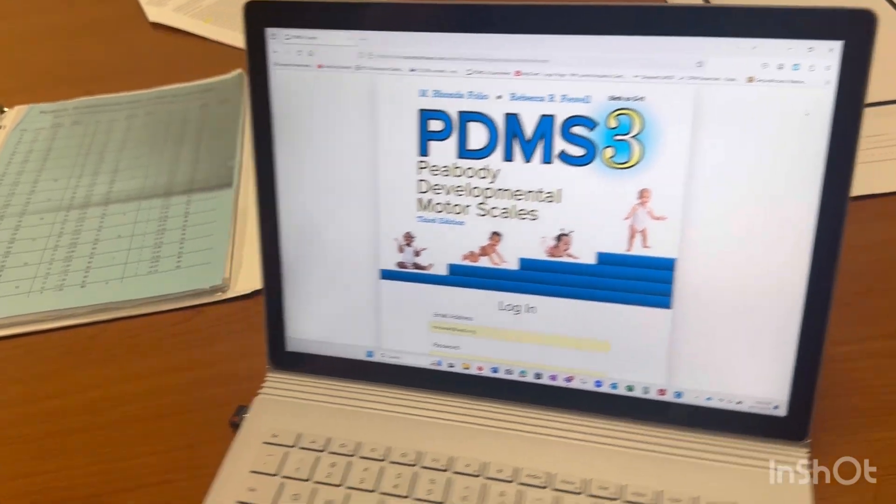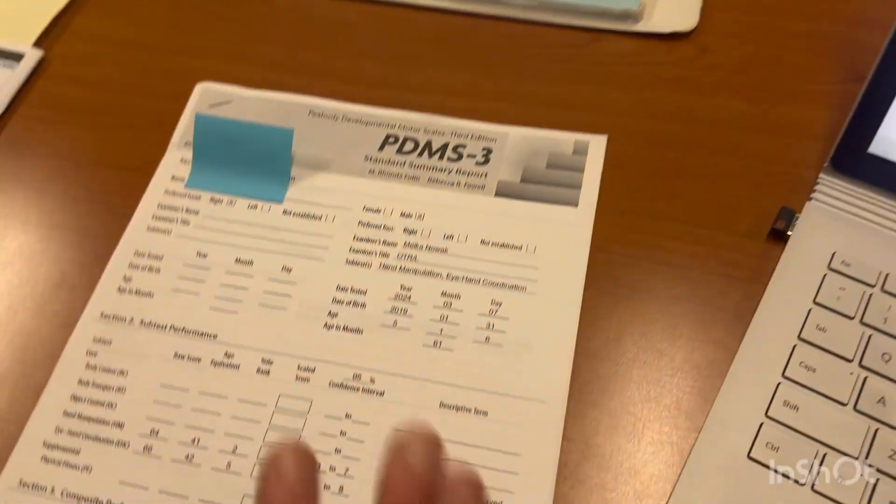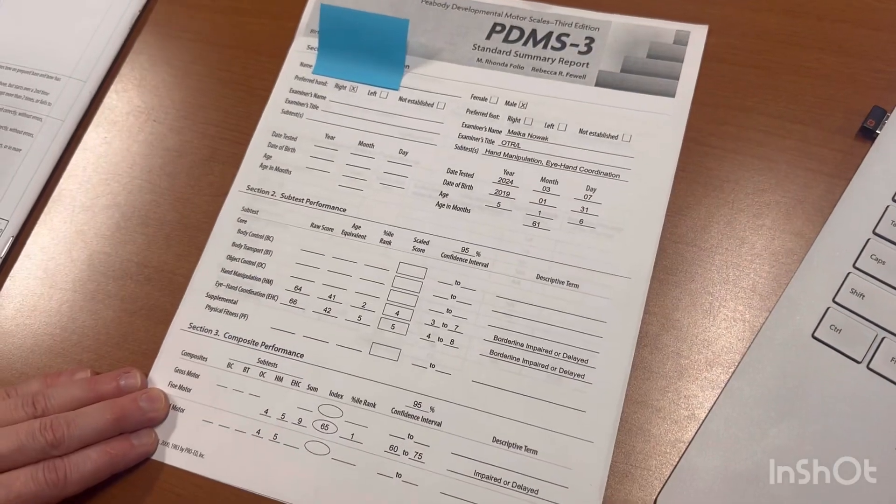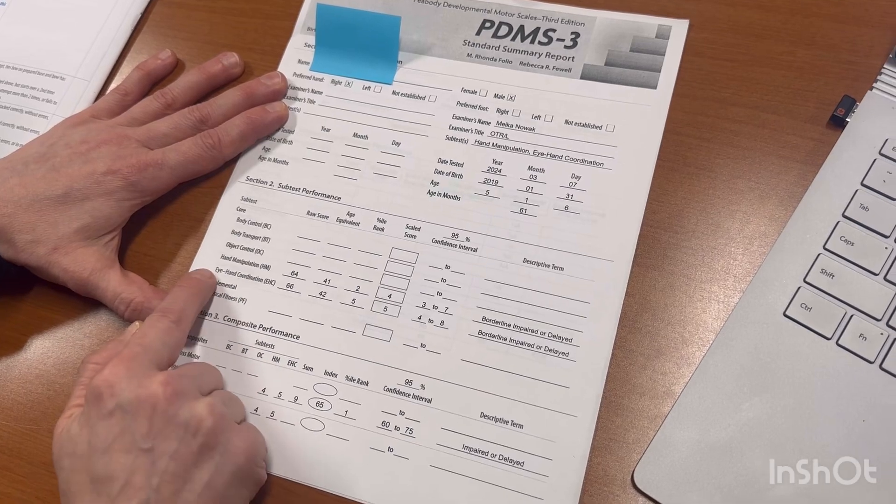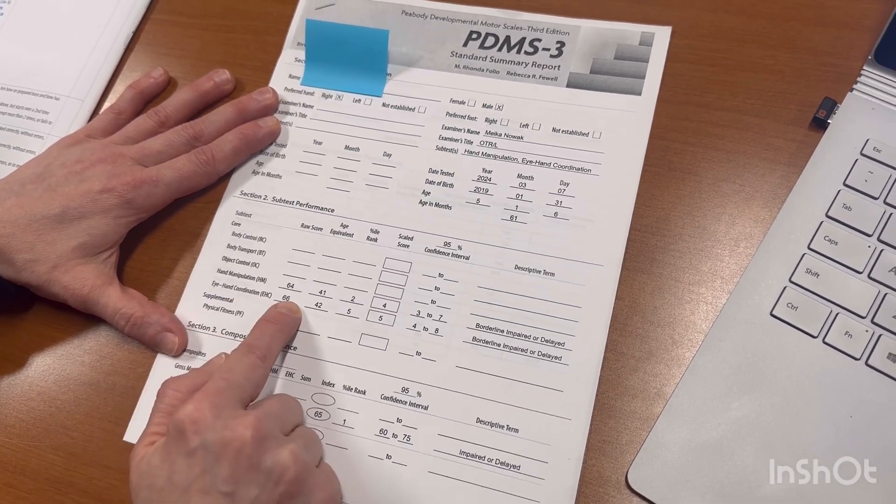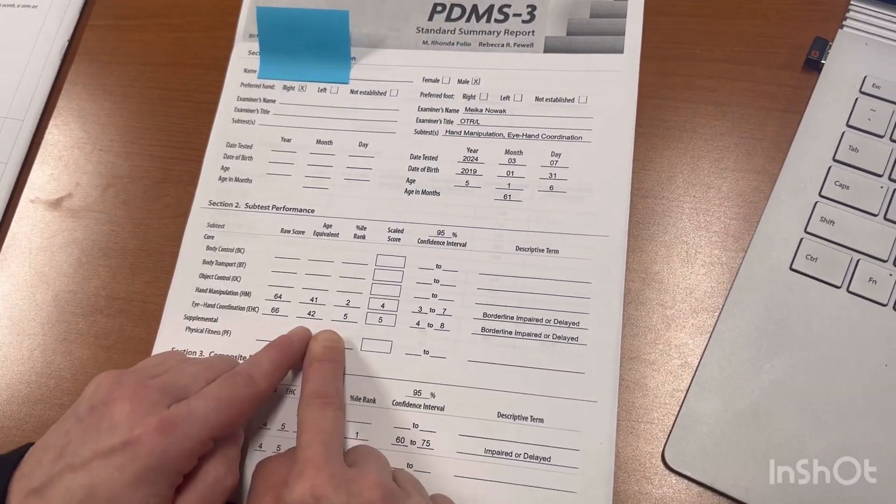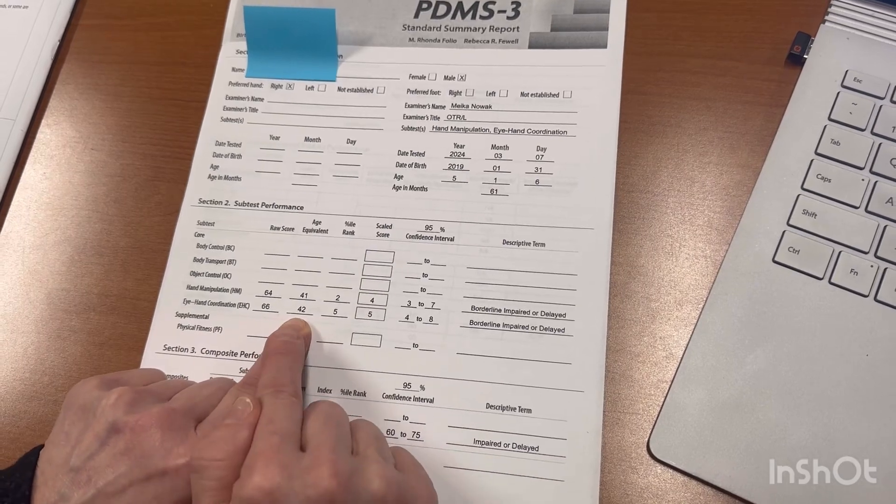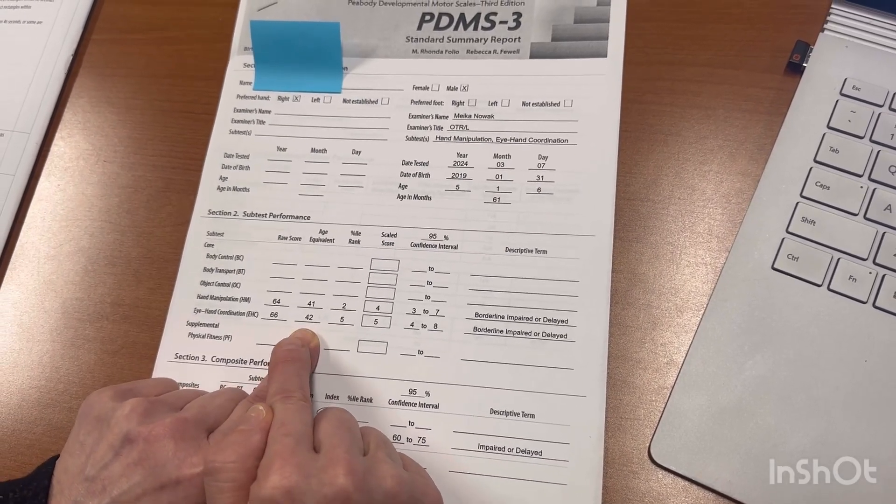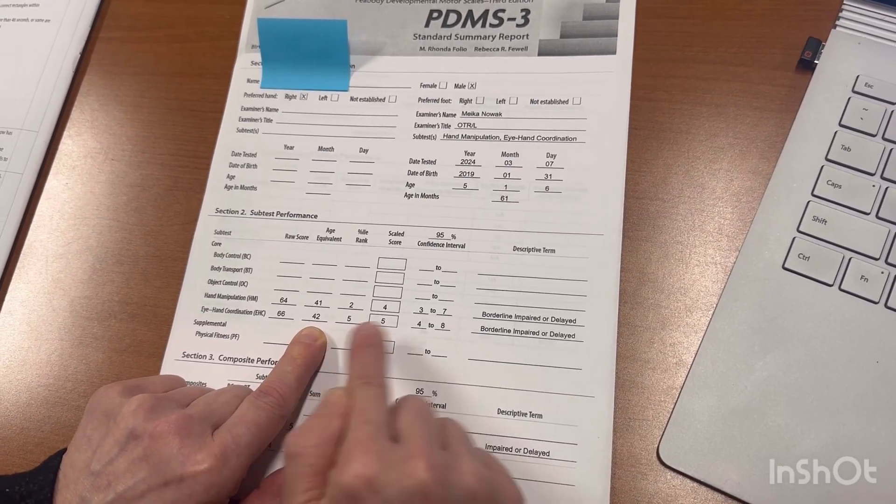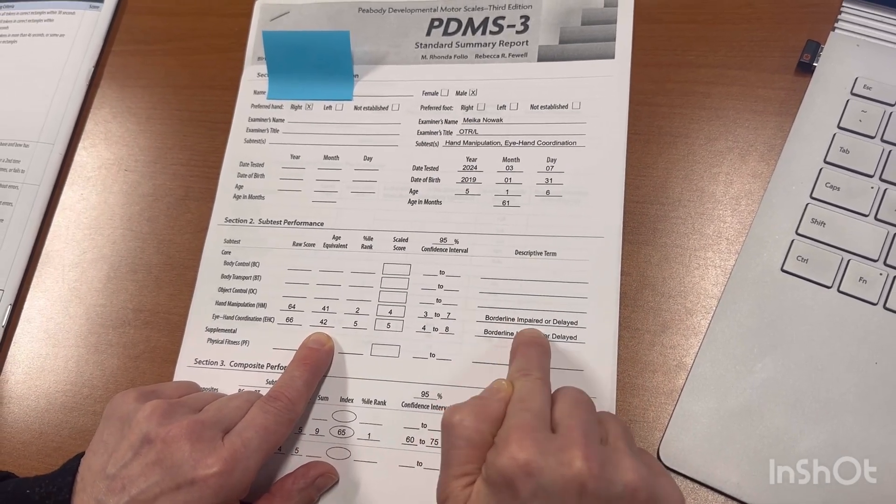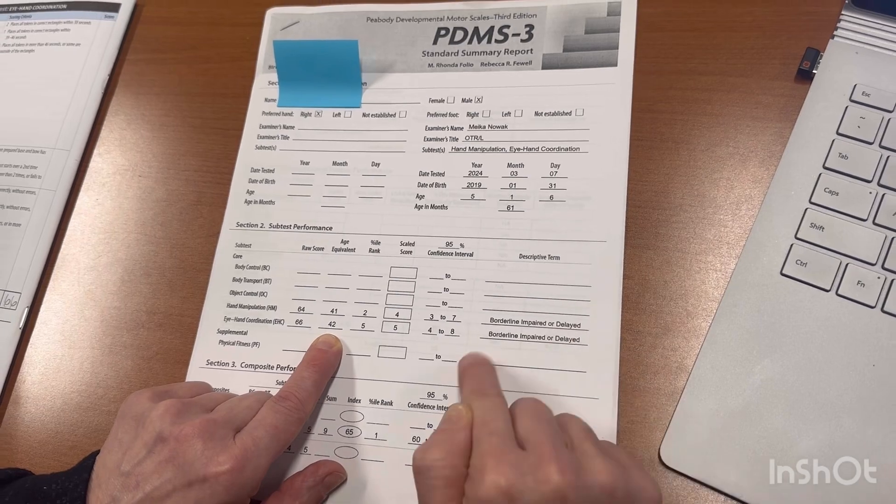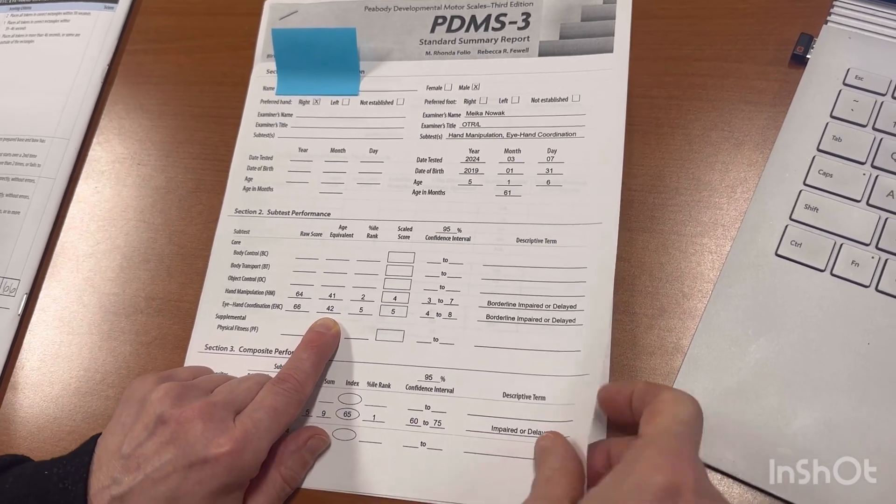And once you do that, it's going to generate a standard summary report. So here is the raw score for hand manipulation, and then eye-hand coordination. And then from you putting in that basic information, they're going to give you age-equivalent, percentile, scaled score, and then the information on borderline impaired or delayed, so that descriptive term.